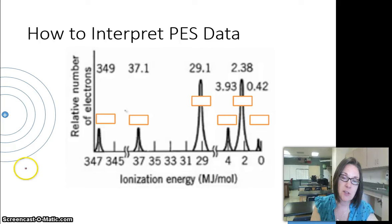Over on the left, I have a little Bohr model so we can orient ourselves as to what this data means. If we start at the beginning, we have 347 megajoules of energy required to remove some electrons. Since that's a high amount of energy, these are probably on the first energy level.